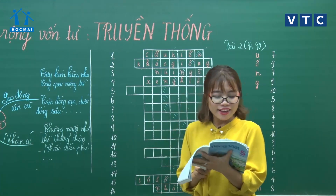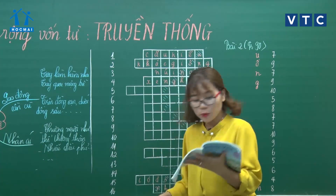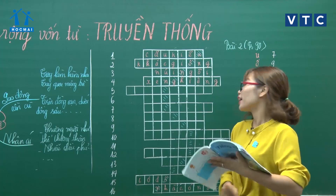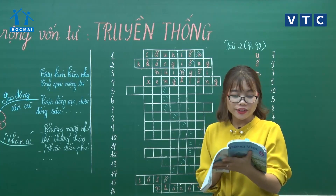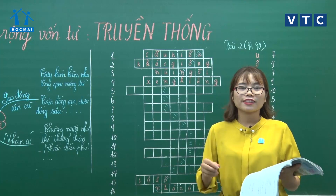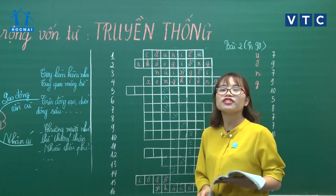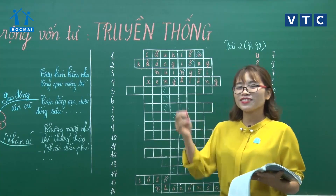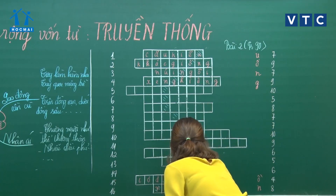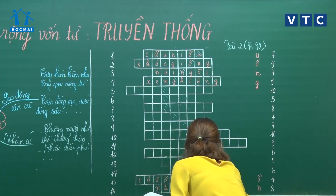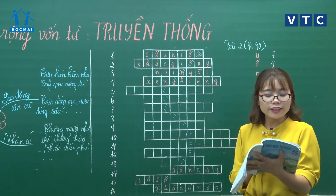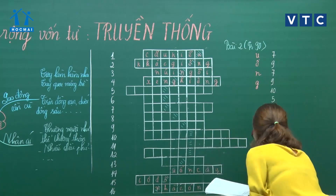Câu thứ 14: 'Uốn cây từ thuở còn non, dạy con từ thuở hãy còn thơ ngây' - tìm được chữ U. Câu số 13: 'Ăn quả nhớ kẻ trồng cây, ăn gạo nhớ kẻ đâm xay dần sàng' - đáp án là 'ăn gạo', tìm được chữ G.